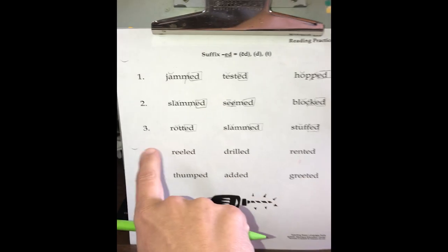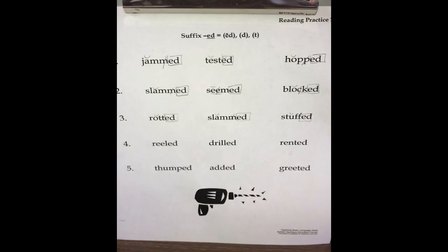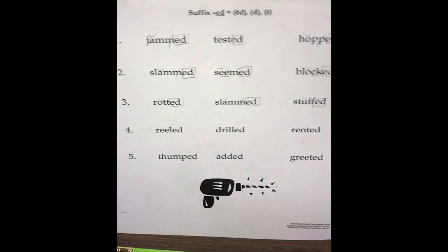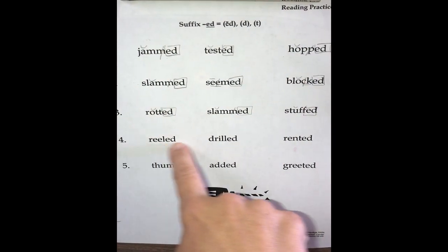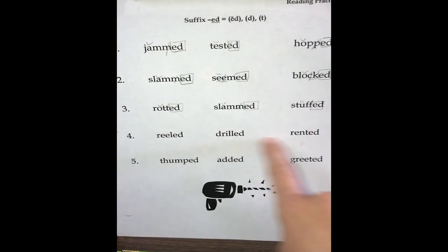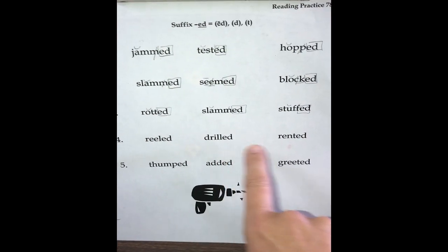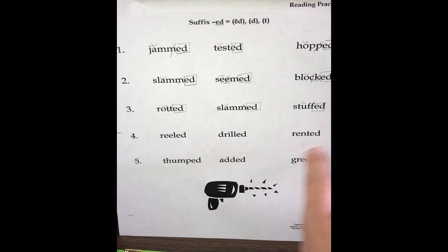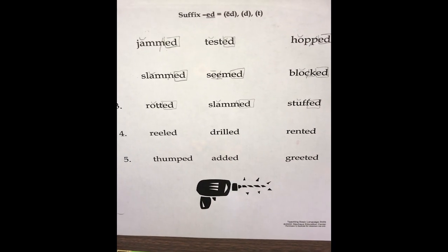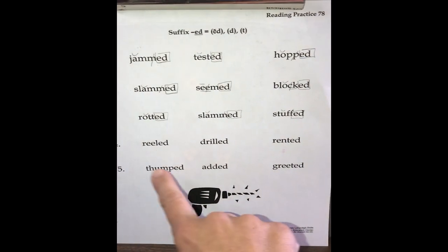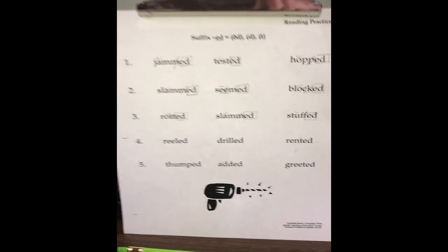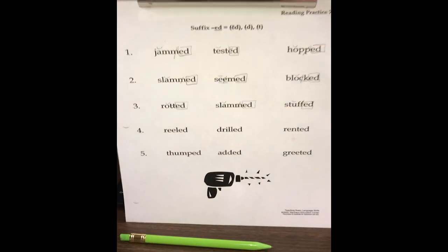By row four, we're going to encourage them to code only if they need to. They'll prepare row four and then read it aloud in unison: Reeled, drilled, rented. Row five — code if you need to, prepare, then read: Thumped, added, greeted. So that's the first read. Remember, our first read was focusing on accuracy.